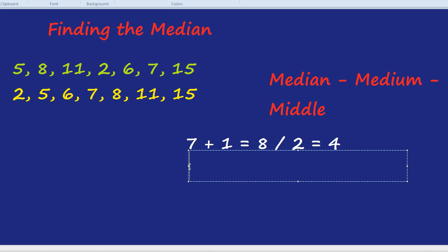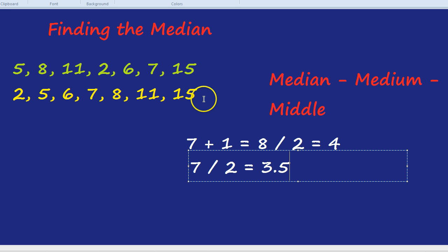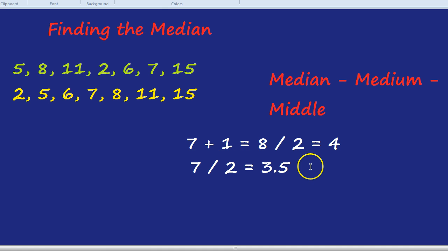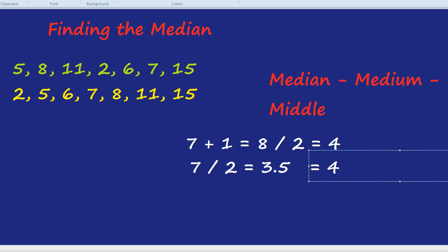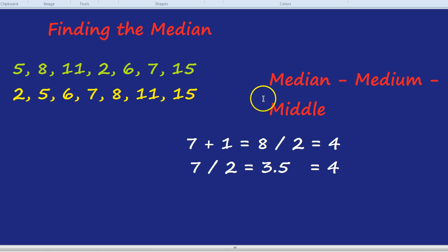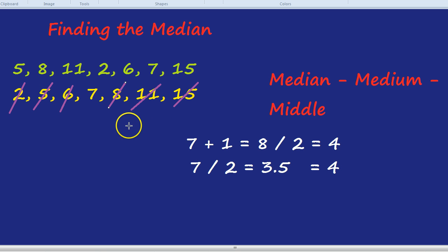Another way is simply dividing the number of numbers straight away. There are 7 numbers. 7 divided by 2 is 3.5, and 3.5 rounds off to 4. So again, we're finding the fourth number. Perhaps the easiest method is to cross out the smallest and cross out the biggest, repeating until you're left with one number. Crossing out smallest and biggest, smallest and biggest, smallest and biggest, we're left with our fourth number, which is 7. So the median is 7.